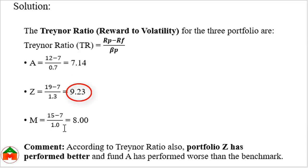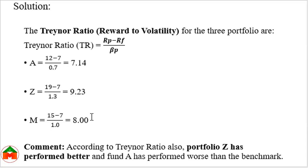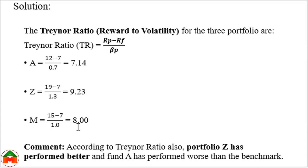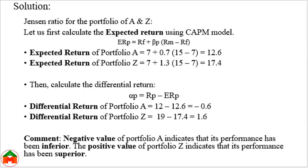The Treynor ratio results are: Portfolio A = 7.14, Portfolio Z = 9.23, and Market = 8.0. The decision-making rule is similar to the Sharpe ratio — we compare each ratio with the market ratio of 8.0. Portfolio Z at 9.23 is higher than the market, so it is performing well. Portfolio A at 7.14 is lower than the market ratio of 8.0, so its performance is below the market benchmark.